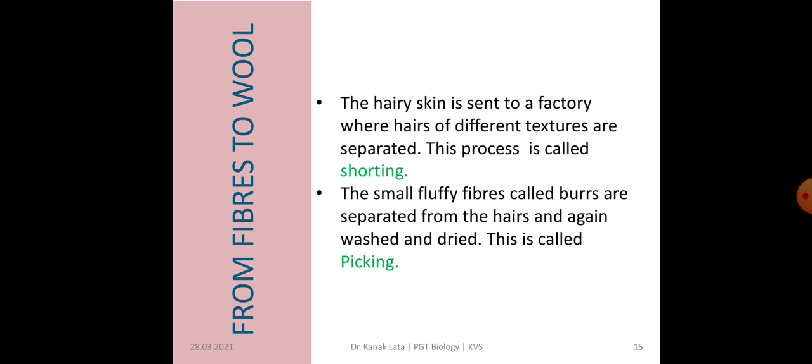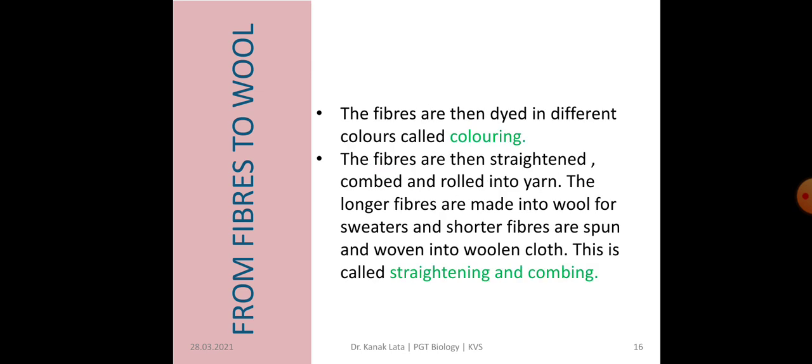The next process is picking. In this step, small fluffy fibers called burrs are separated from the hairs — they are brushed and dried. This process is called picking. After picking, the hairs are dyed in different colors — this coloring of fibers is called coloring. Then the fibers are straightened, combed, and rolled into yarn. The longer fibers are made into wool for sweaters, and shorter fibers are spun and woven into woolen cloth. This process is called straightening and combing.